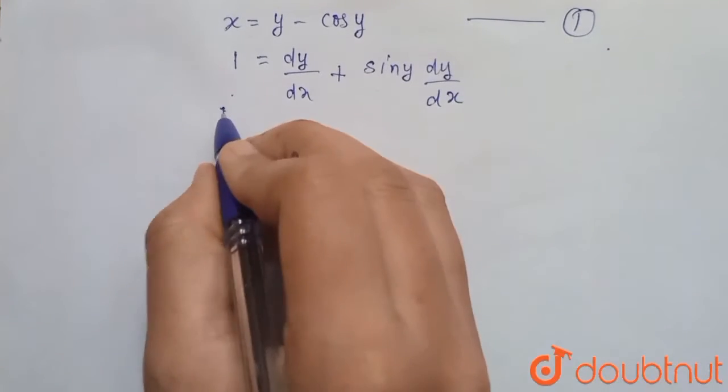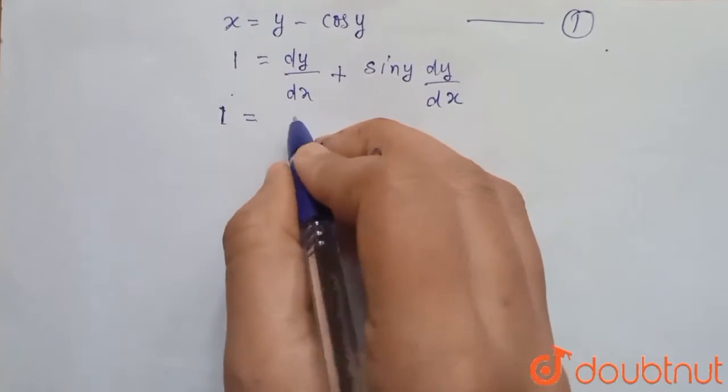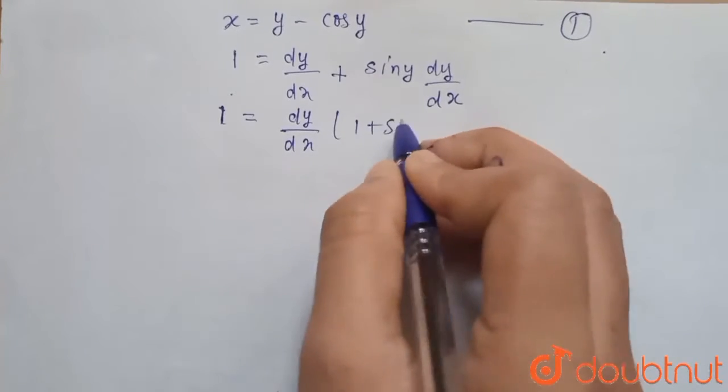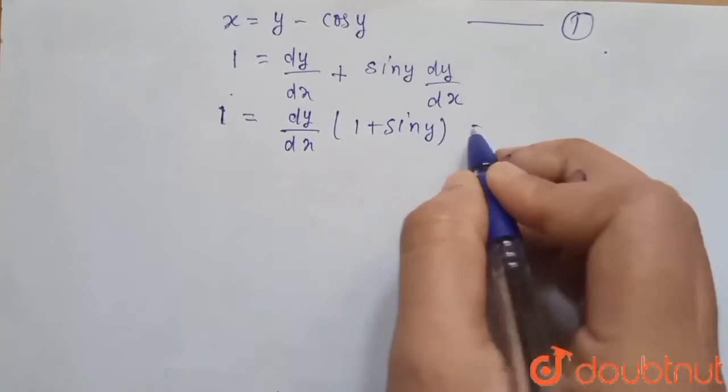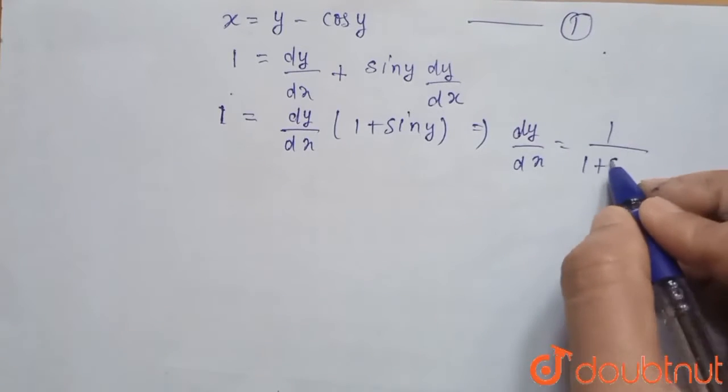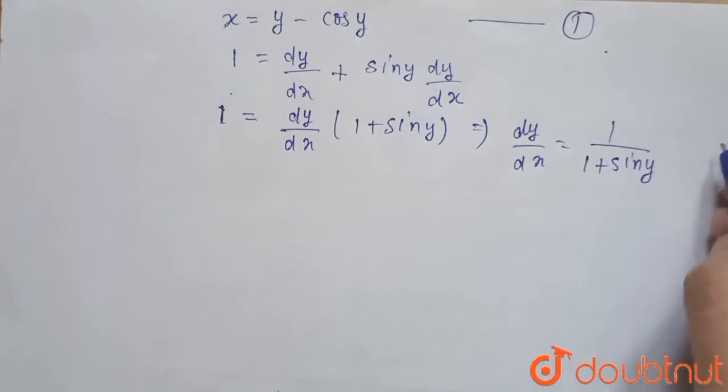So from this we can find the value dy upon dx. This will be equal to dy upon dx times 1 plus sin y, and here we get dy upon dx equals to 1 upon 1 plus sin y. Name this equation number 2.